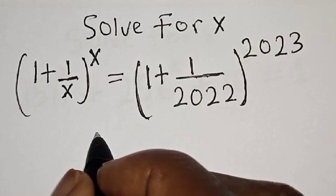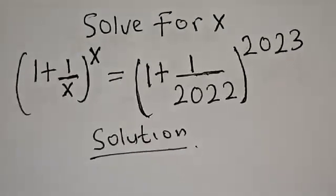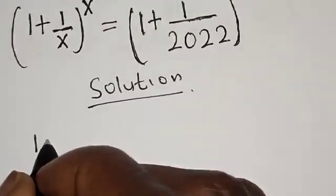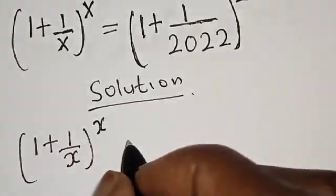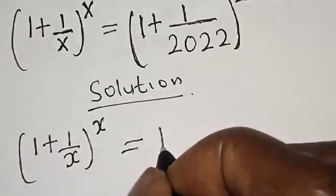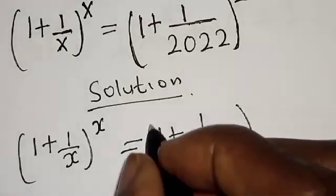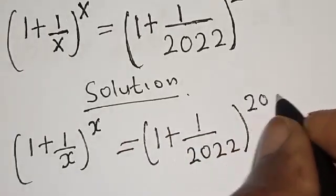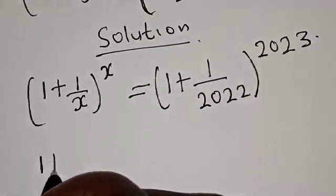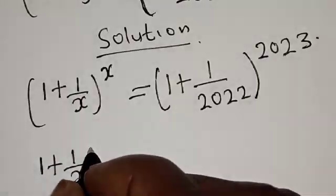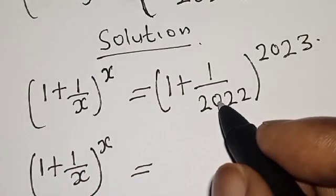Solution: we have the given equation (1 + 1/x)^x = (1 + 1/2022)^2023. Let's consider the equation on the right hand side.